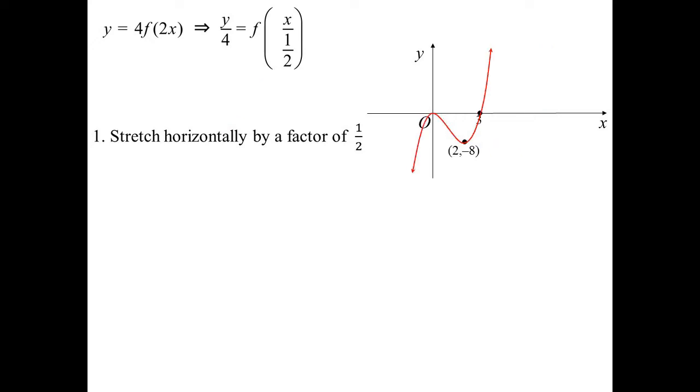Those values are being affected. The y values are not changing at all. Now, let's have a look at the y. The y has been stretched vertically by a factor of 4. So now the x values are staying in the same spot, but the y values are getting multiplied by a factor of 4. So minus 8 times 4 is, of course, minus 32.